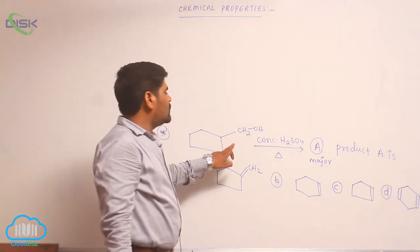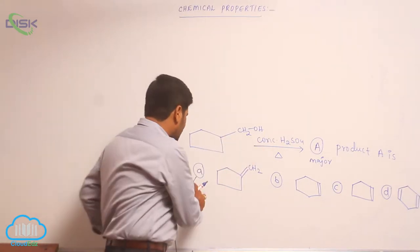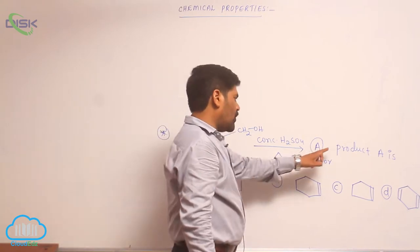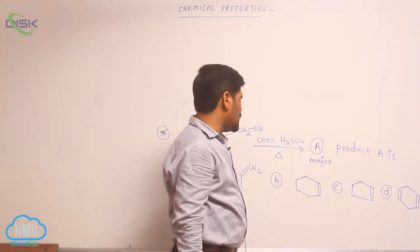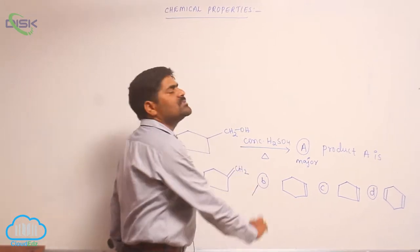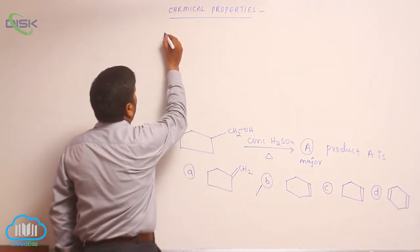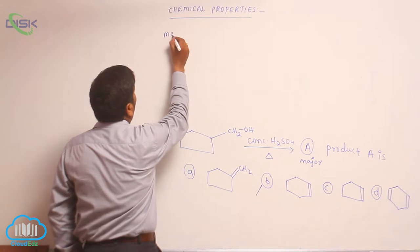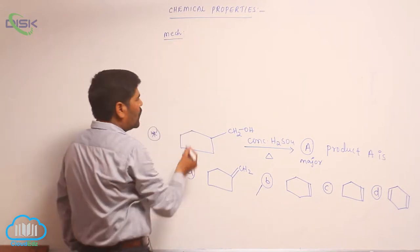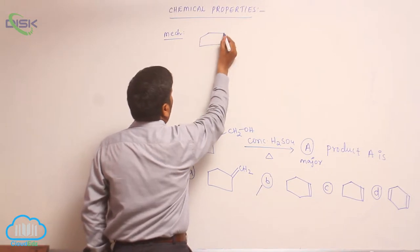When an alcohol reacts with concentrated sulfuric acid, the major product is option B. Now we will go through the mechanism of this particular product.